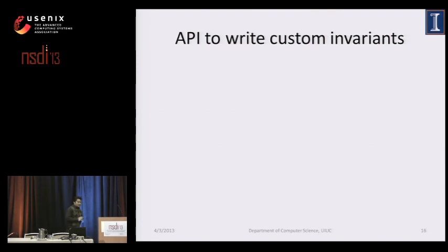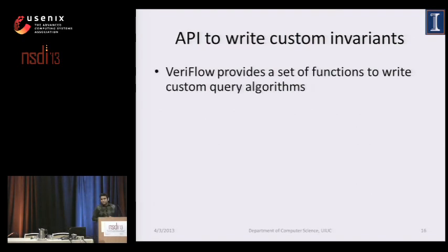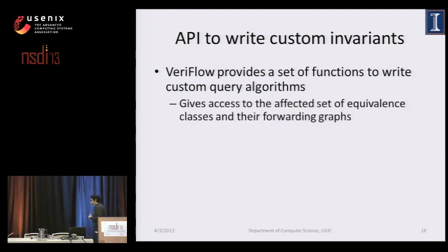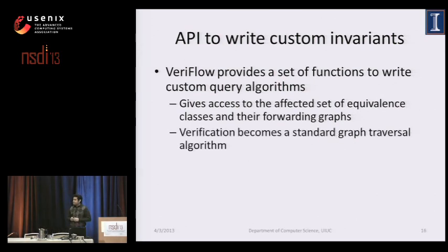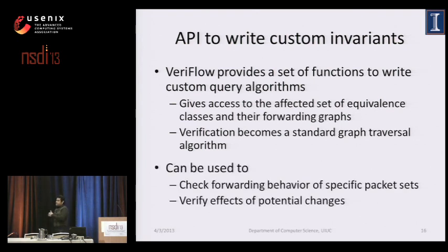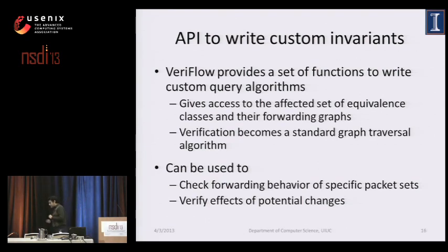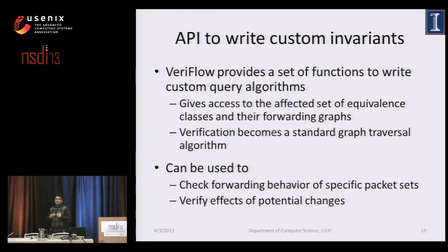VeriFlow also provides an API for network users to write custom invariant checkers. It gives access to the underlying affected equivalence classes and forwarding graphs. Given these two, verification becomes a standard graph traversal algorithm. With this API, network users can manipulate how forwarding graphs are traversed and how alarms are handled. This is useful in an SDN setting where both network users and operators are developing custom software, allowing them to incorporate verification logic directly into their applications.